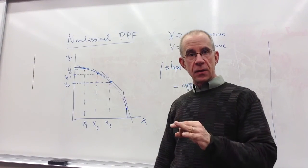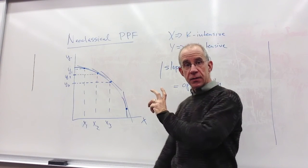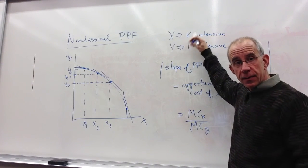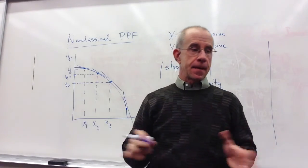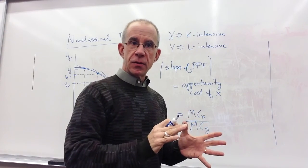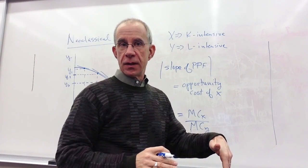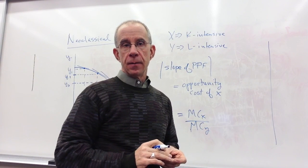Bottom line, with the neoclassical framework, you have this trade-off that really relates to the different intensities of labor and capital. If they were equally, labor and capital could be equally useful in the two industries, you wouldn't have this kind of increasing trade-off that you see here in the standard neoclassical PPF.